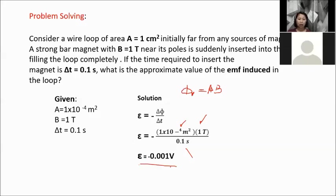Therefore, the induced EMF is −0.001 volts. This is a short-lived EMF. A single D-size battery is about 1.5 volts, so this small induced EMF would need further development to reach that level. This illustrates that the induced EMF in this simple case is quite small.